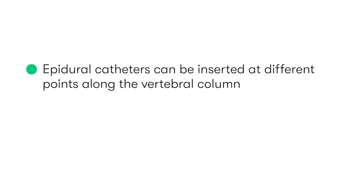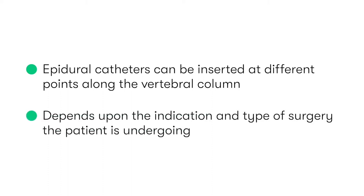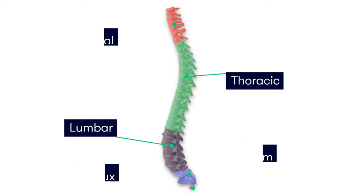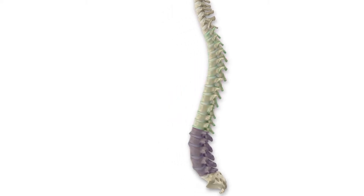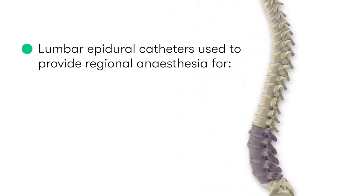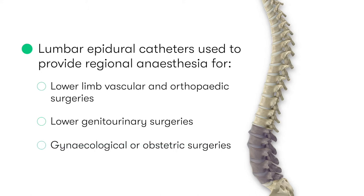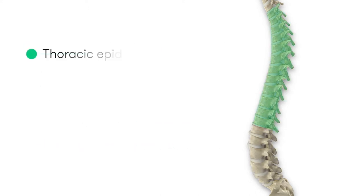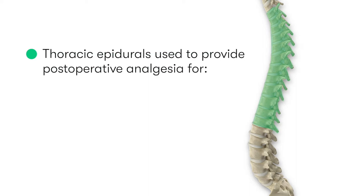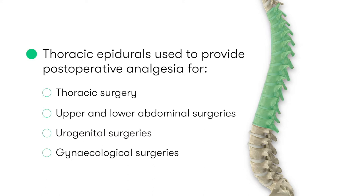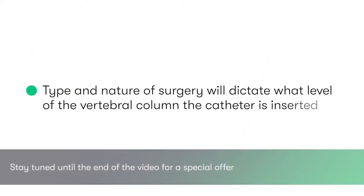Epidural catheters can be inserted at different points along the vertebral column to achieve different levels of anesthesia and pain control, depending on the indication and the type of surgery the patient is undergoing. The most common sites for insertion are the lumbar spine and the thoracic spine. Lumbar epidural catheters can be used for lower limb vascular and orthopedic surgeries, lower genitourinary surgeries, and gynecological or obstetric surgeries. Thoracic epidurals can be used for thoracic surgery, upper and lower abdominal surgeries, urogenital surgery, and gynecological surgeries. The type and nature of the surgery will dictate the level of the vertebral column at which the catheter is inserted.